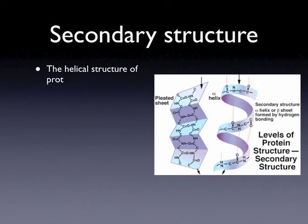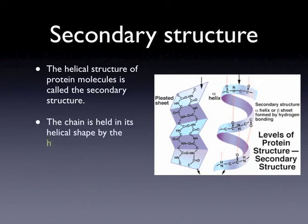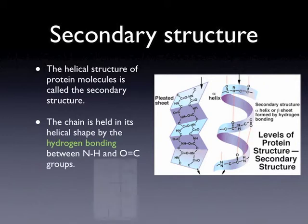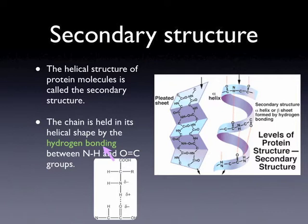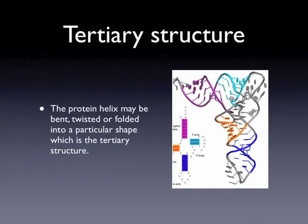The helical structure of protein molecules is called the secondary structure. The chain is held in this helical shape by hydrogen bonding between N-H and O=C groups — the picture shows the hydrogen bonding between the two groups. The protein helix may be bent, twisted, or folded into a particular shape, which is the tertiary structure.